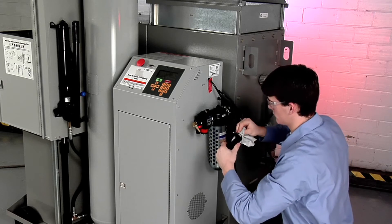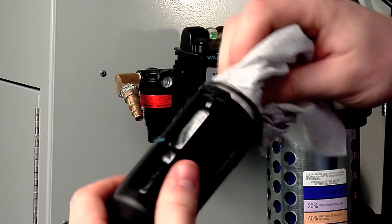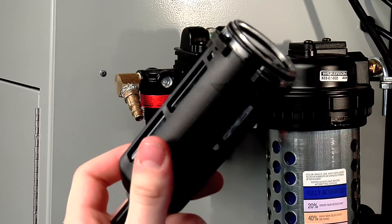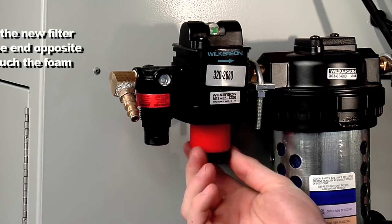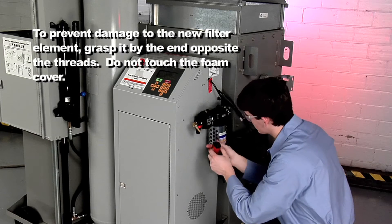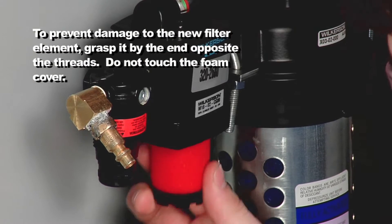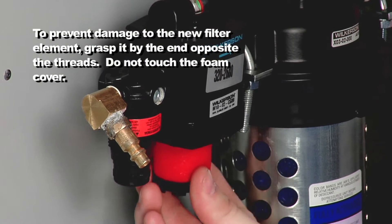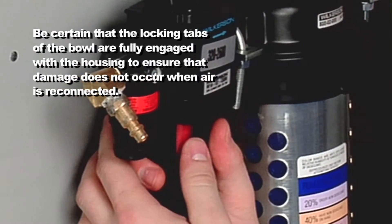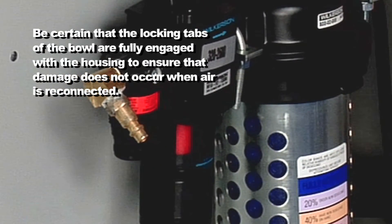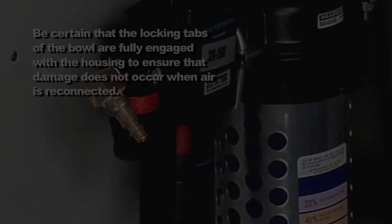Use a clean cloth to clean the bowl. Inspect the bowl for damage. Grasp the bottom of the used filter element and turn it clockwise to remove it. Install the new filter element being careful to seat the o-ring in the groove. Reinstall the bowl on the housing by pushing it into the housing and turning the bowl to catch the locking tabs under the retainers.